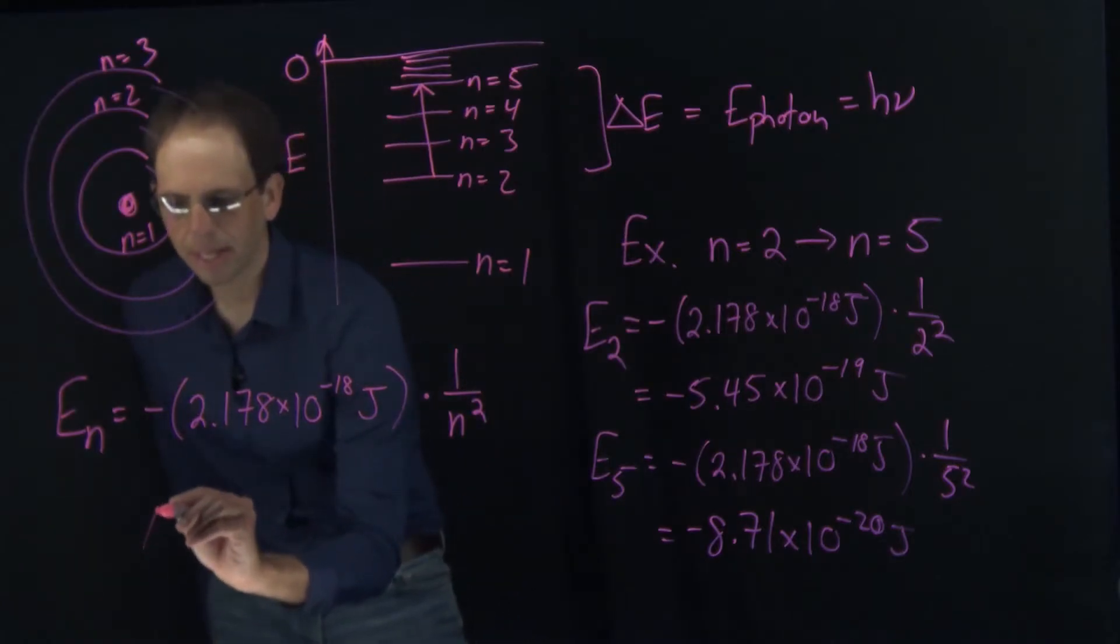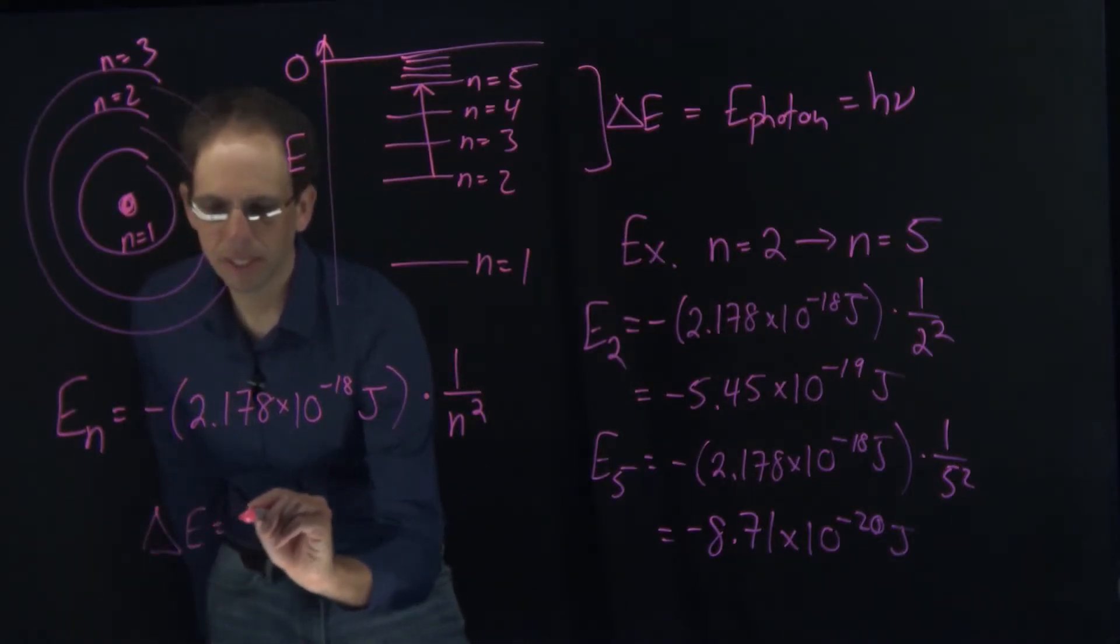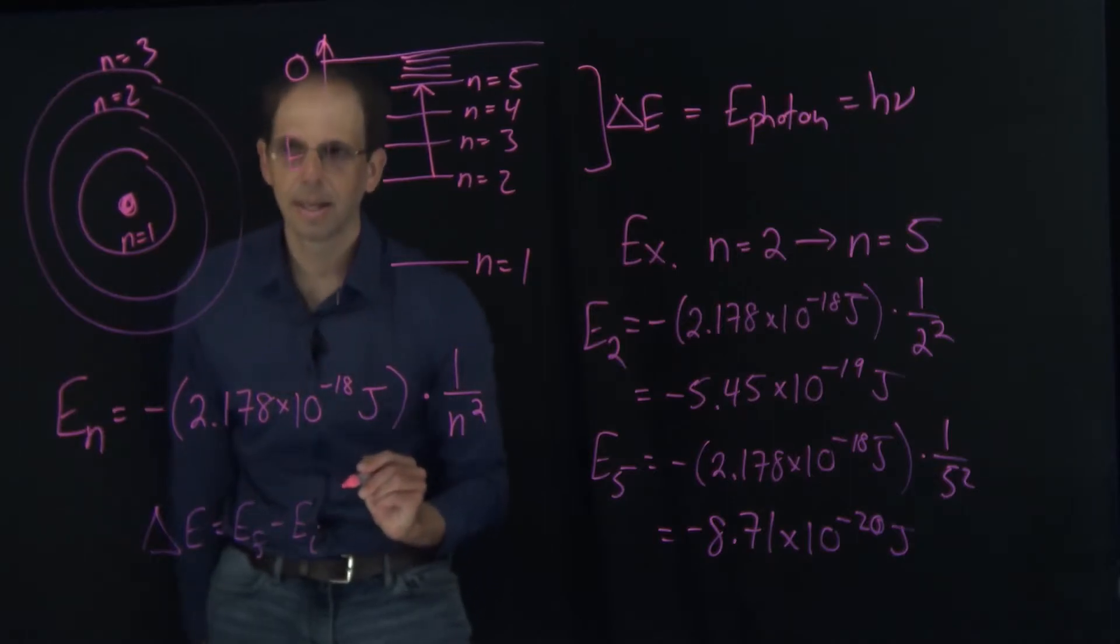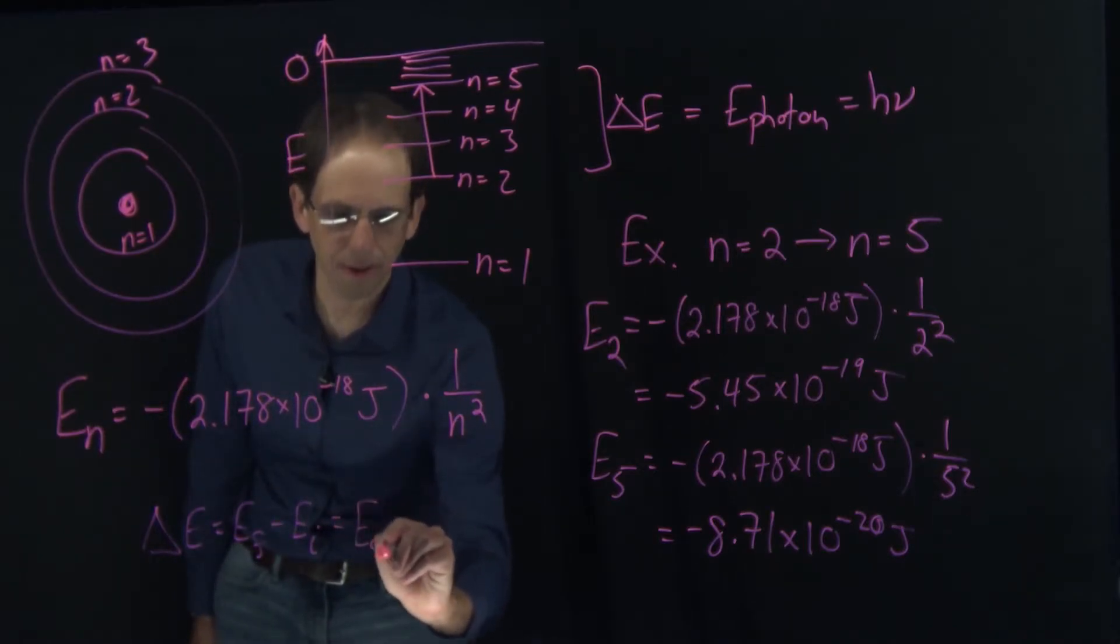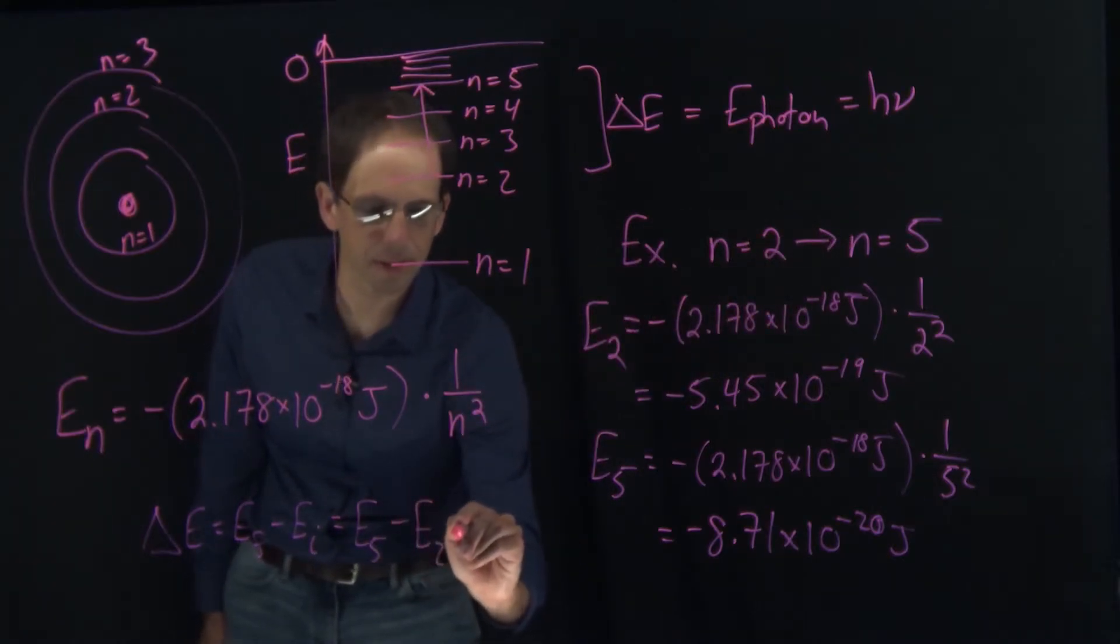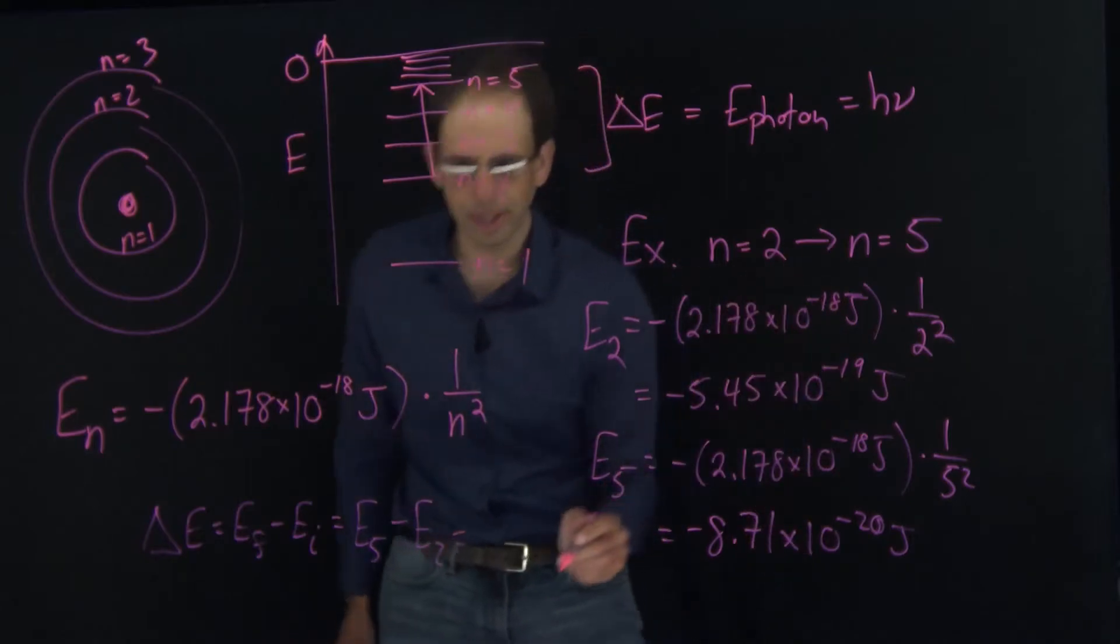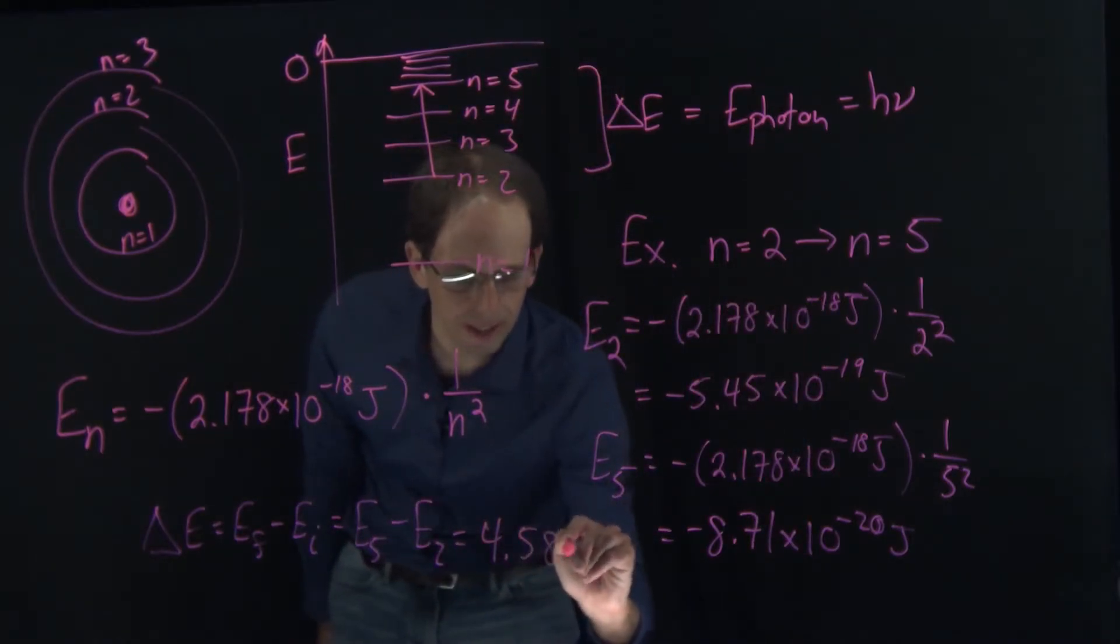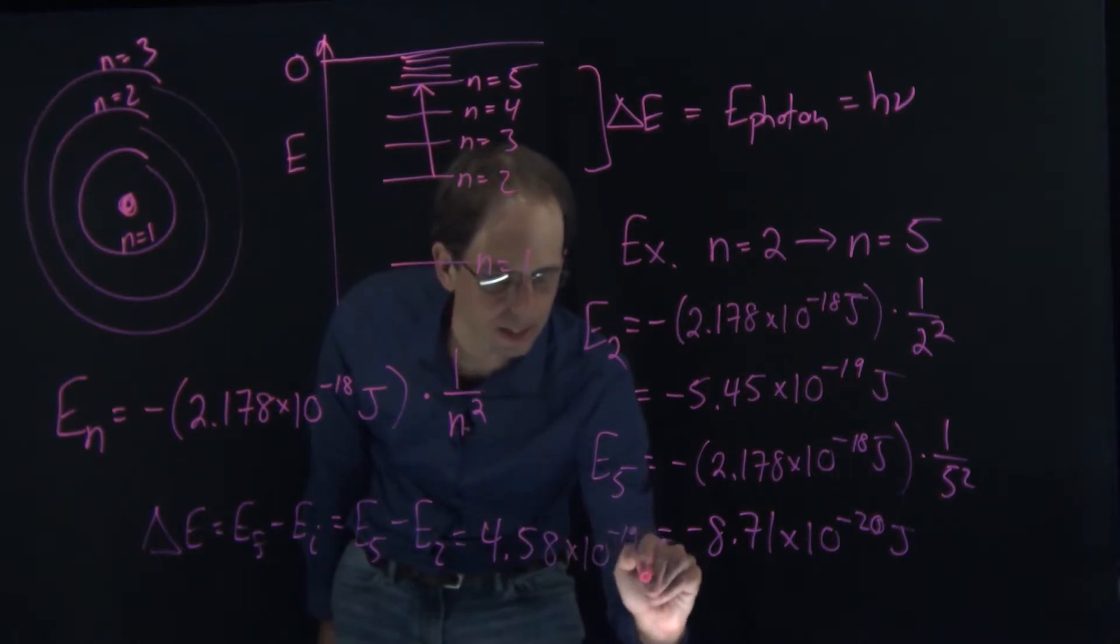So my delta E, which is equal to E final minus E initial, that is going to equal E5, which is my final state, minus E2, my initial state. Take the difference between these and I get 4.58 times 10 to the minus 19 joules.